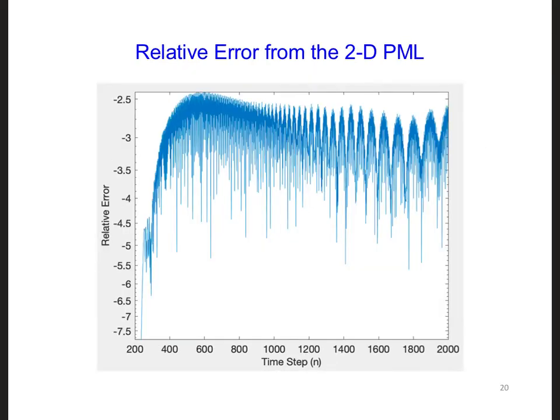And this is what I got for the relative error. We can see that this relative error is not as good as what we saw in one dimension. We get down to minus 2.5, that's on a log scale.